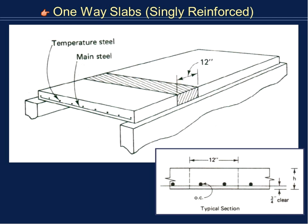We refer to this as a one-way slab or singly reinforced, because we're analyzing it as a one-way beam. A one-way slab is when one of the dimensions is half of the other — so the span you're designing has to be half the length of the overall perpendicular side. For example, if this span was 10 feet, the perpendicular dimension has to be at least 20 feet to consider it one-way. We assume the beam bends in one direction, and the perpendicular direction is supported by a beam or girder.